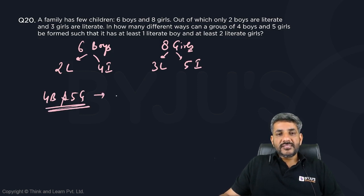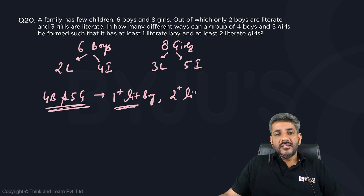We have to make a group of four boys and five girls such that it has at least one literate boy—so one plus literate boy—and it has at least two literate girls. So two plus literate girls.